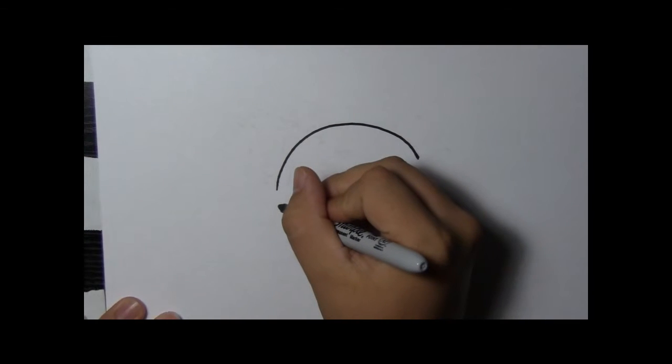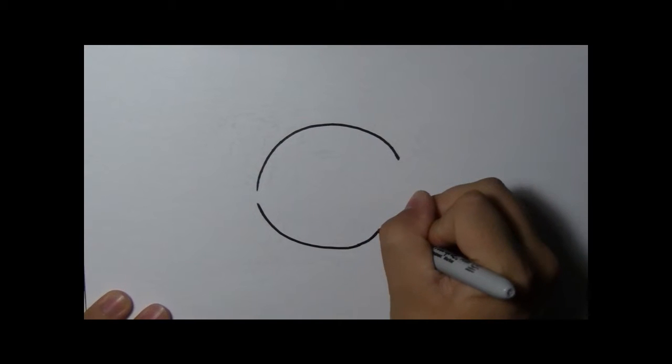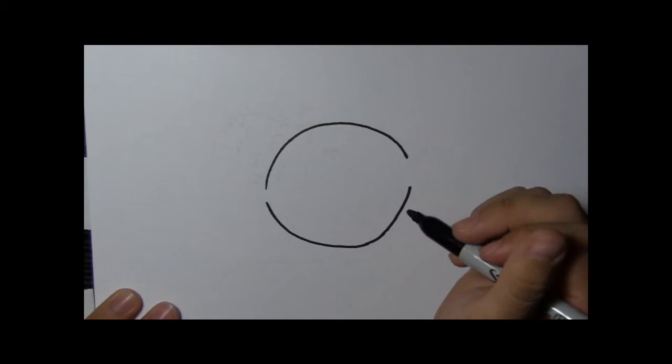Now we're going to make another half circle, but don't connect all the sides. We have two half circles now.